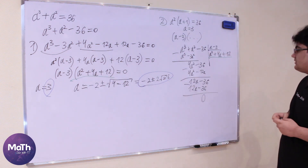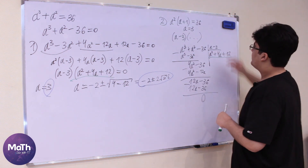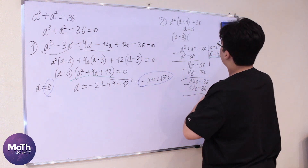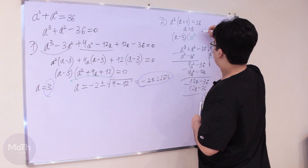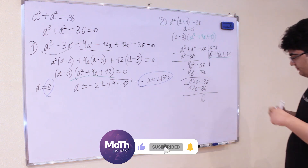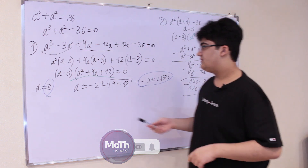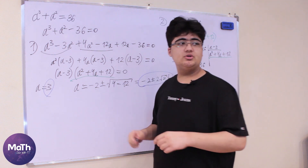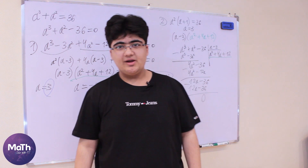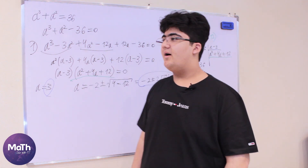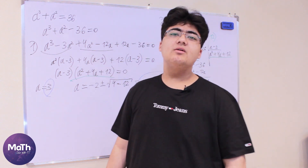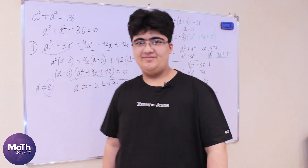So again we get a² + 4a + 12, and the factorization is (a - 3)(a² + 4a + 12) = 0 — the same answers via a different approach. I hope you guys enjoyed the video. Don't forget to like and subscribe, and see you in the next video. Bye!